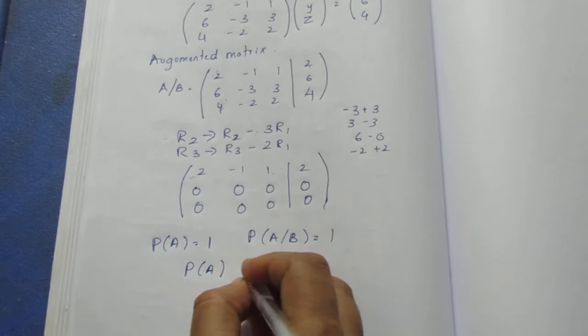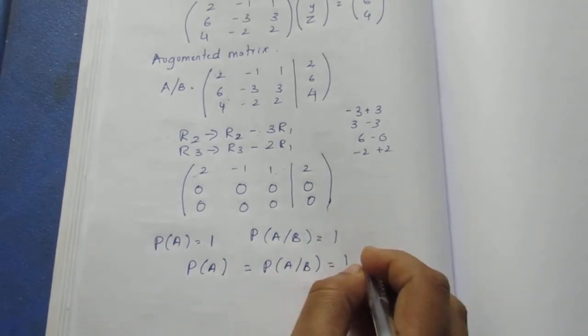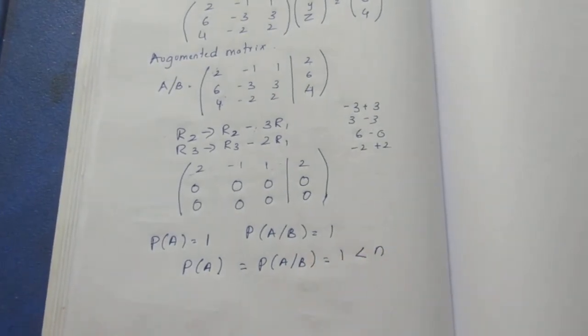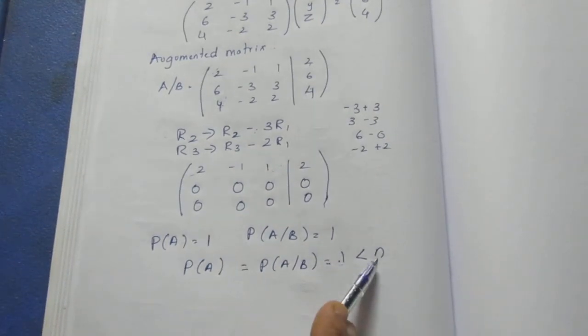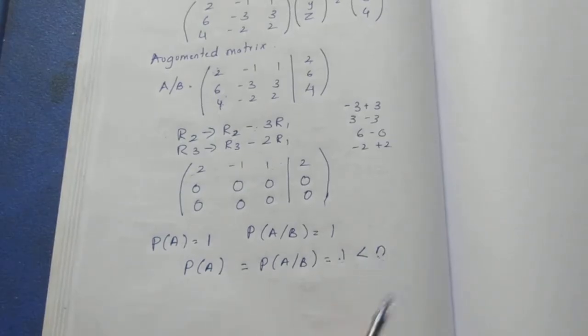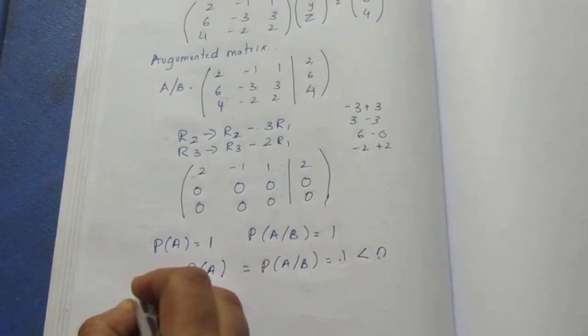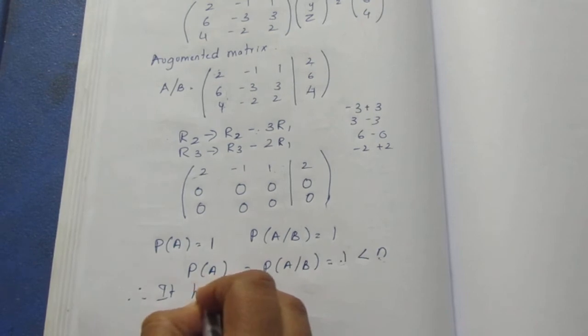So rank of A is equal to rank of A/B is equal to 1. That means less than n. How many variables? x, y, z, three. Then n is 3. 1 is less than 3. This is number of variables. Therefore, it has infinitely many solutions.